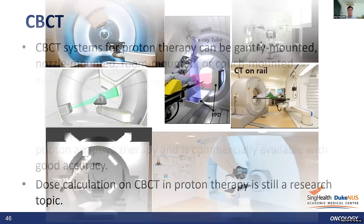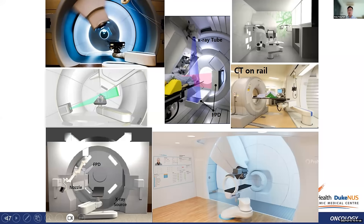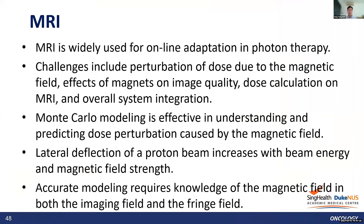This slide shows a typical imaging system in a proton therapy setting — gantry-mounted with two flat panel detectors, in-room CT, and a couch-mounted CBCT making the system more compact. MRI is currently being developed for use with proton therapy systems in Germany. MRI is widely used for online adaptation in photon therapy, but not yet in proton therapy. Challenges include dose perturbation due to the magnetic field, effects on image quality, dose calculation on MRI, and overall system integration.